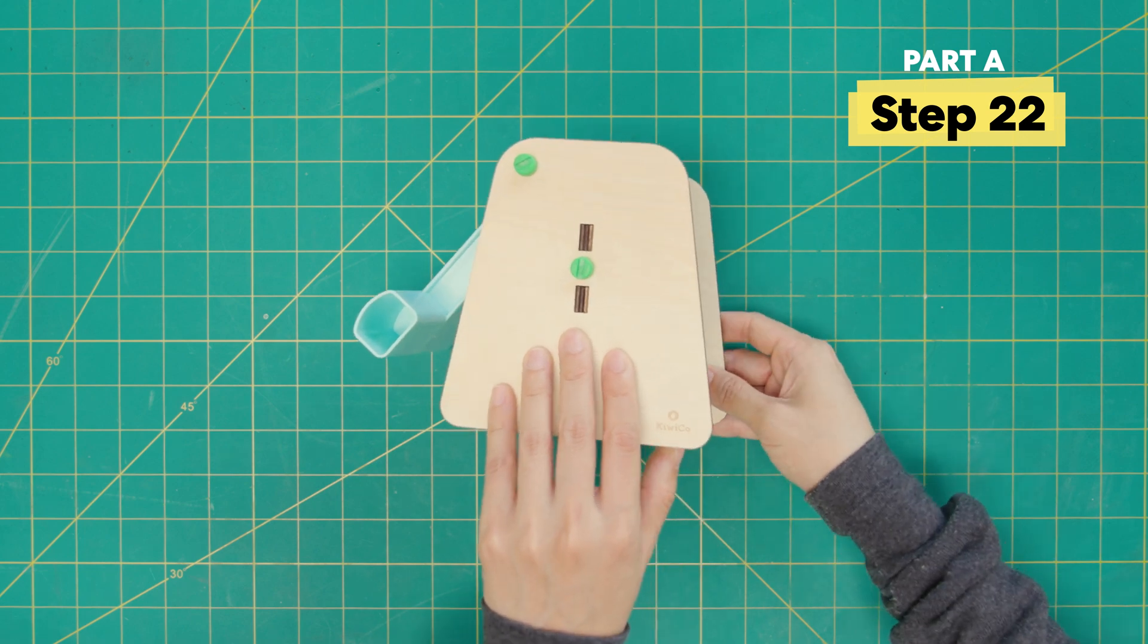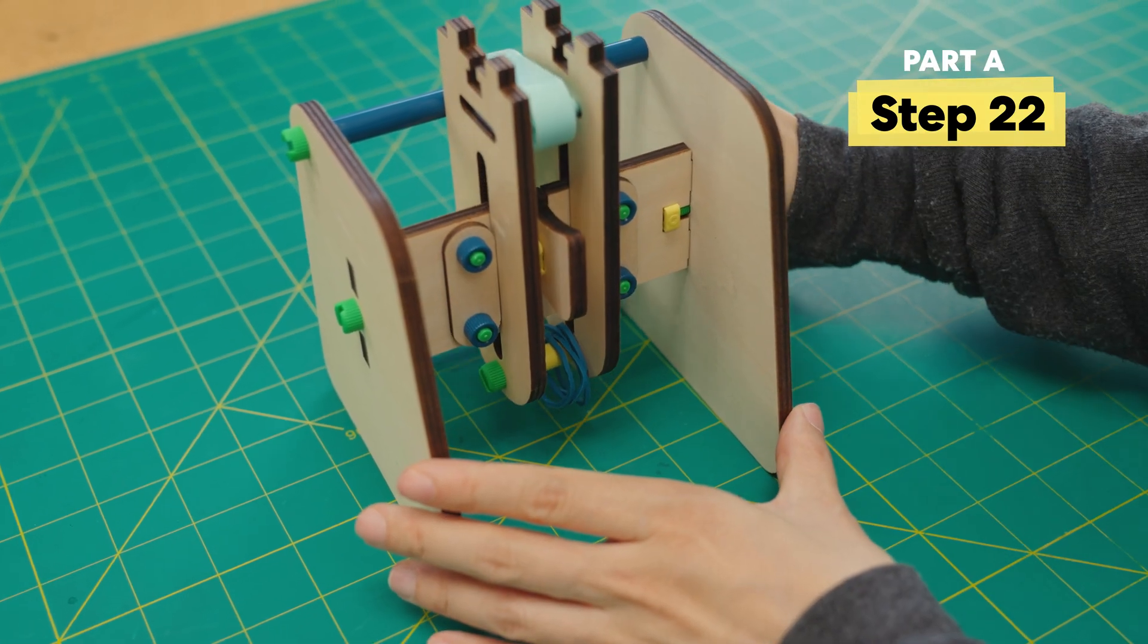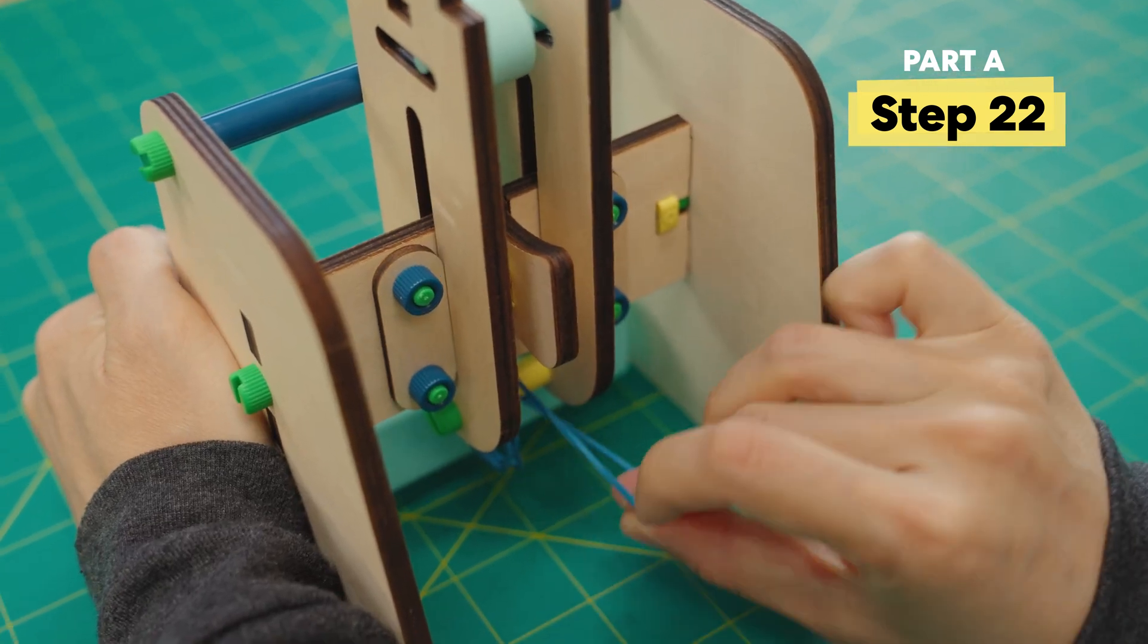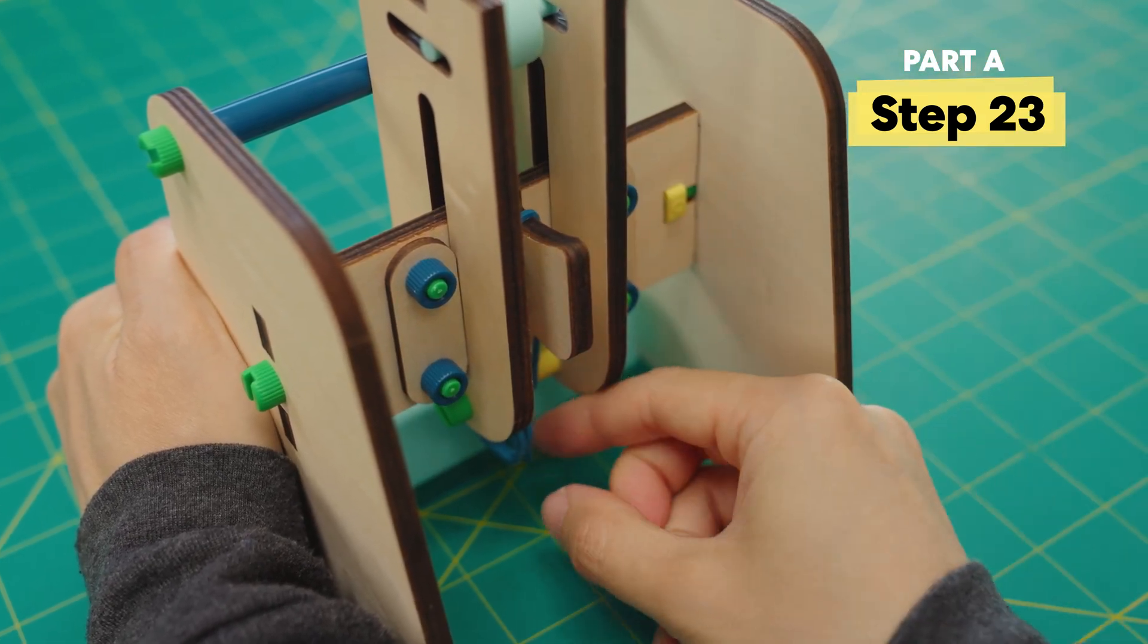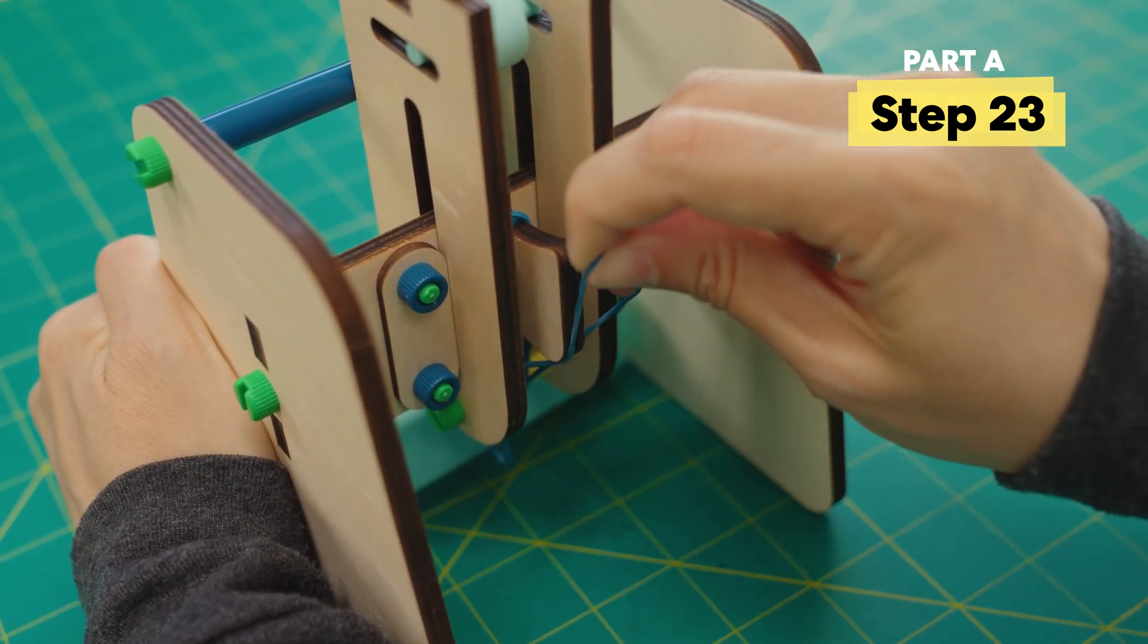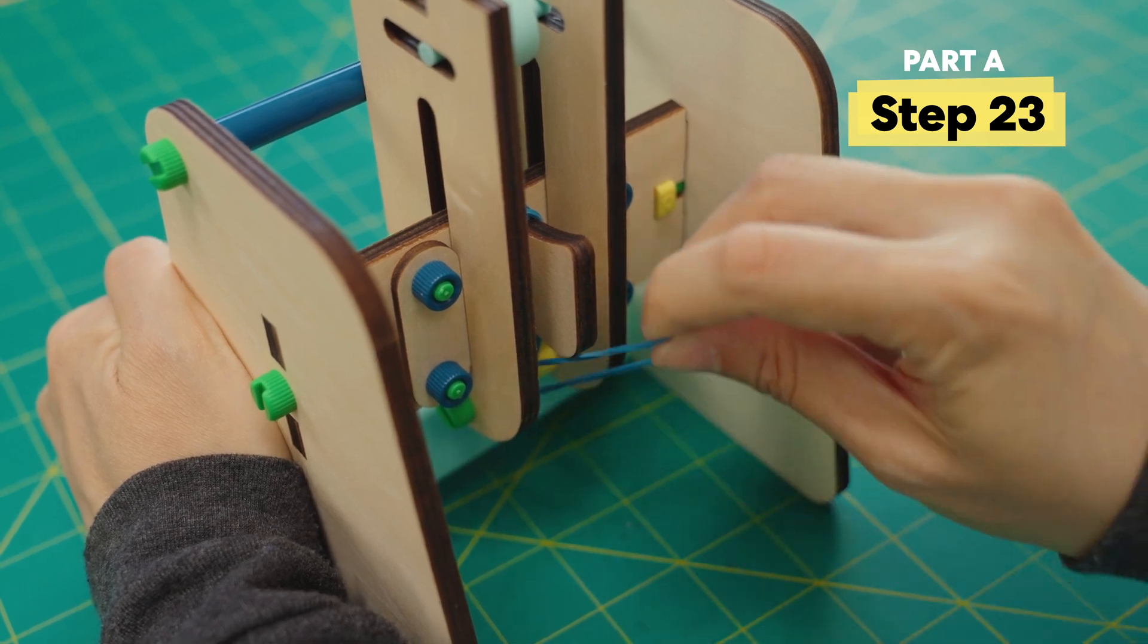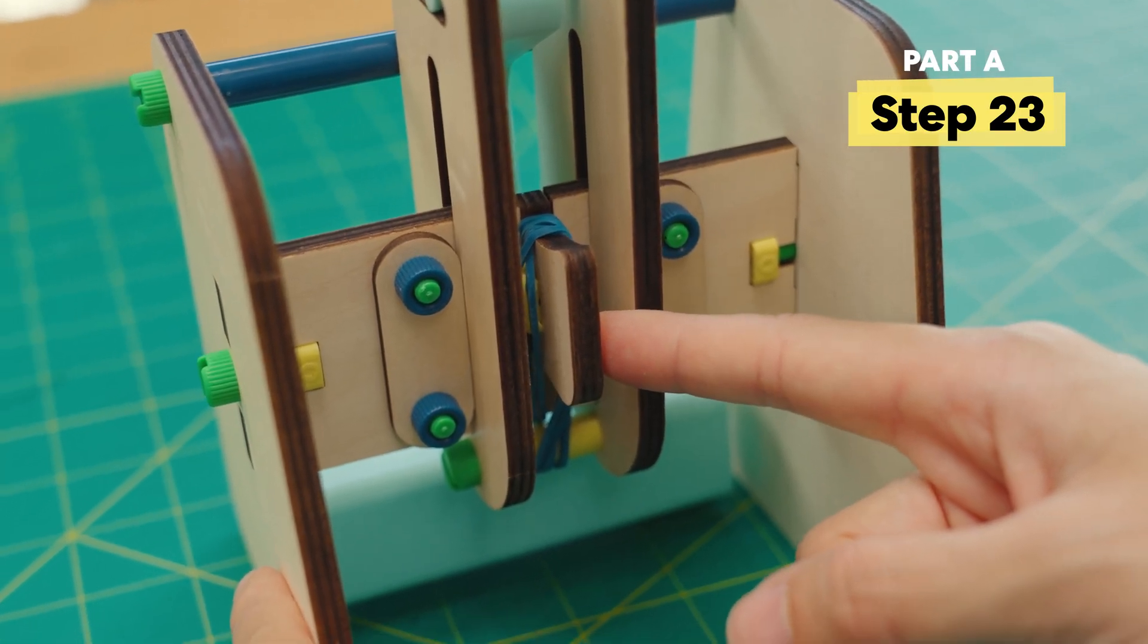Now that you have your sides on, let's flip your launcher over. A tip here is you'd actually push the kicker in. Grab a rubber band one at a time and stretch it over this piece. Repeat this for all the rubber bands. You'll notice that my rubber bands are twisted and that's okay.